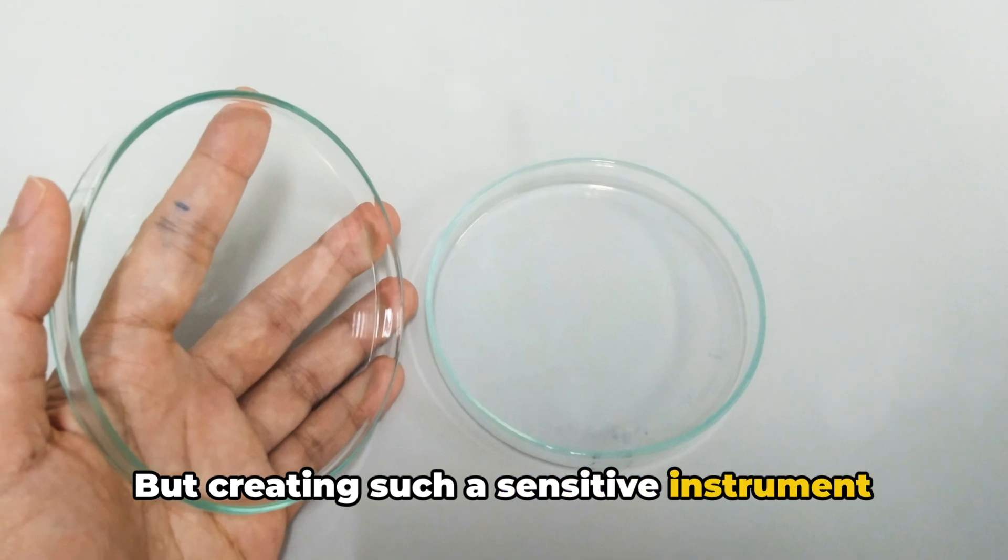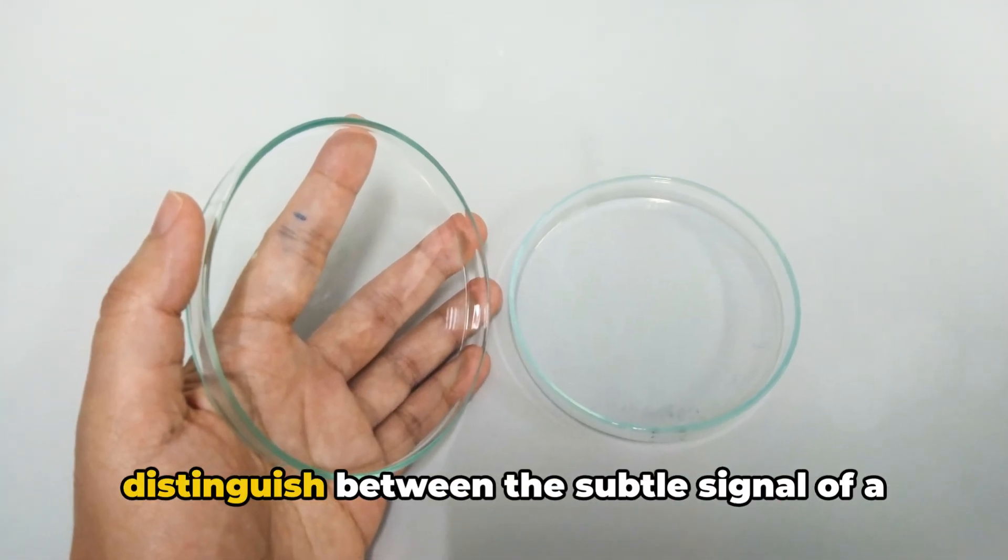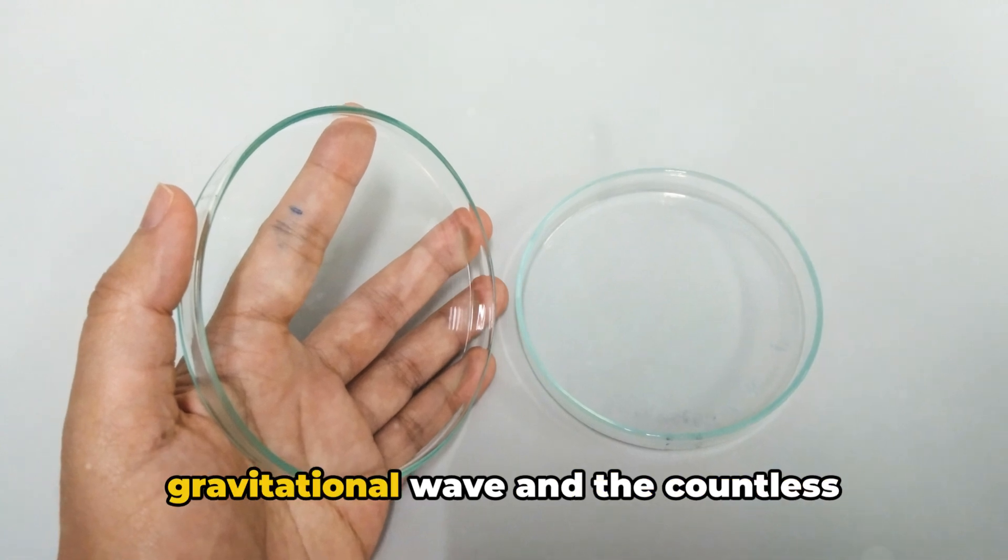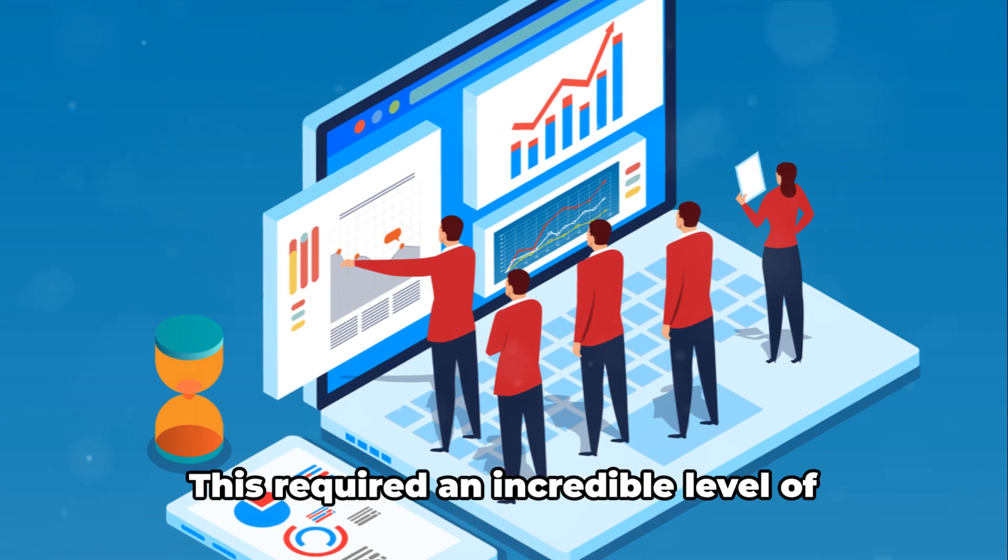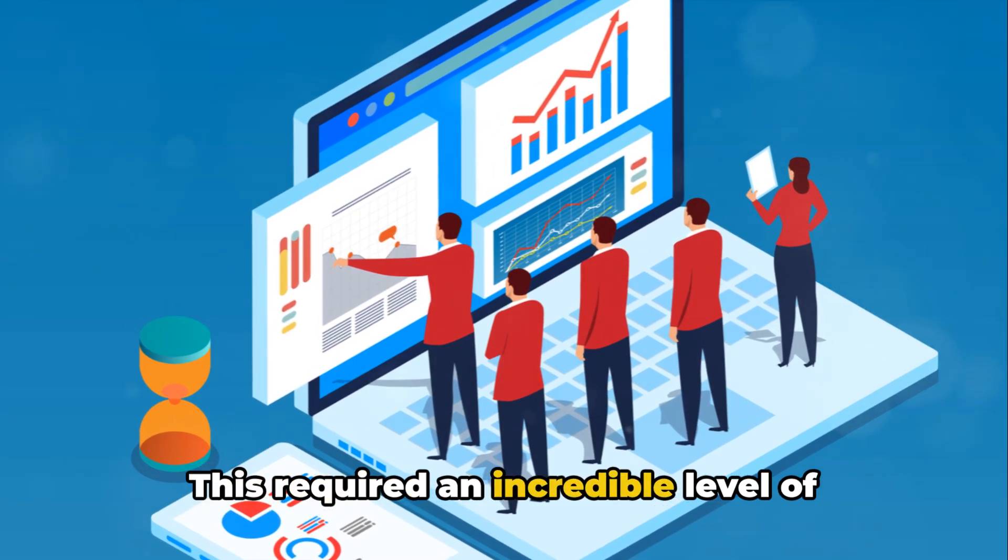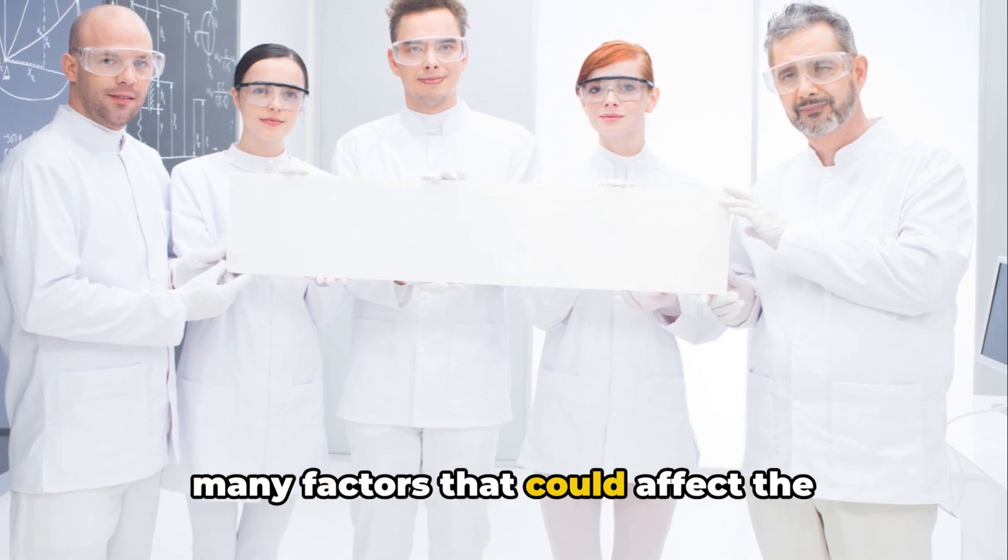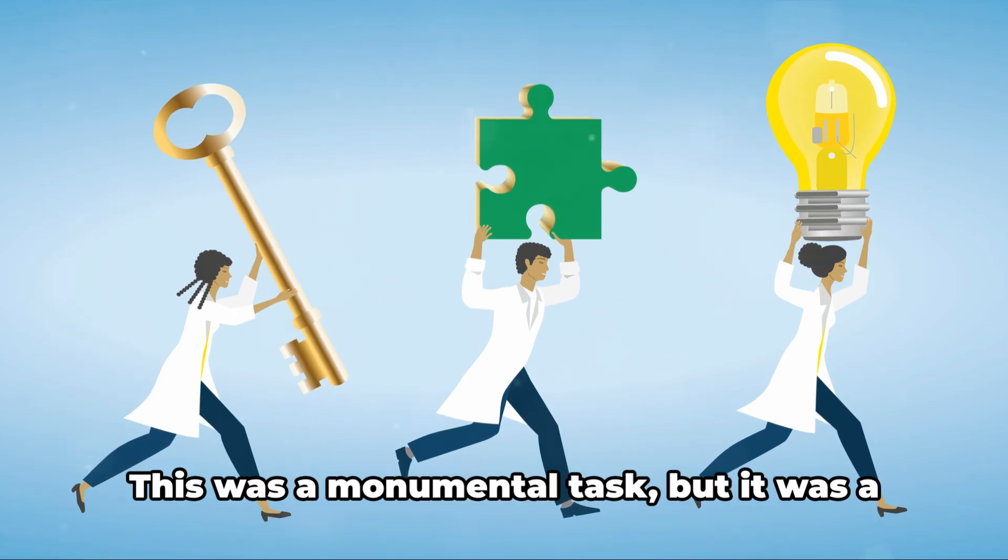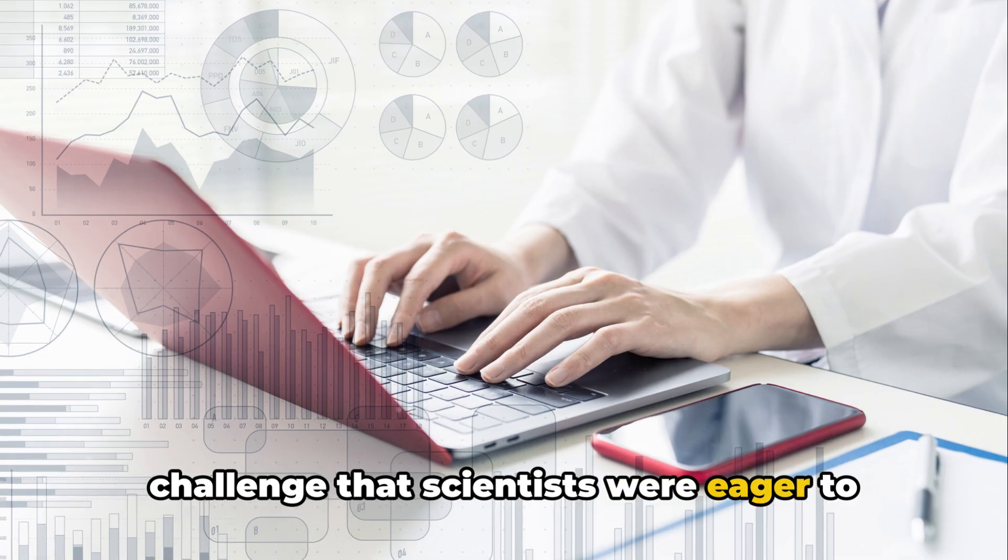But creating such a sensitive instrument was not enough. Scientists had to ensure that LIGO could distinguish between the subtle signal of a gravitational wave and the countless sources of noise that could mimic or mask it. This required an incredible level of precision, and a deep understanding of the many factors that could affect the instrument's readings. This was a monumental task, but it was a challenge that scientists were eager to take on.